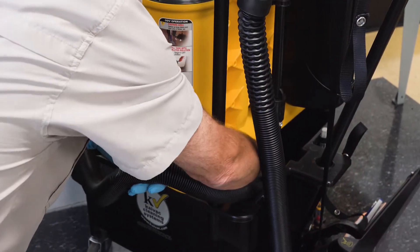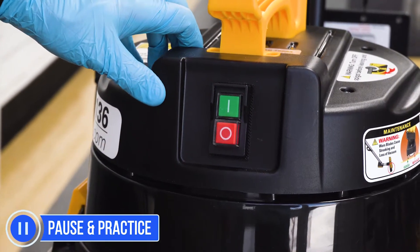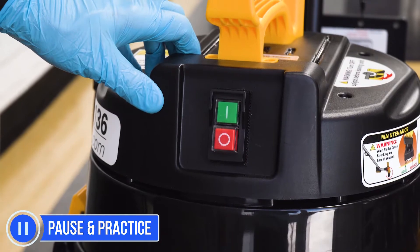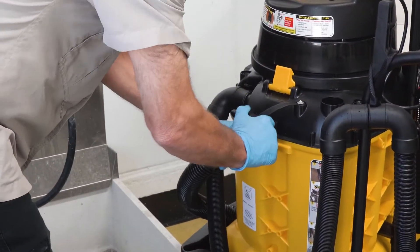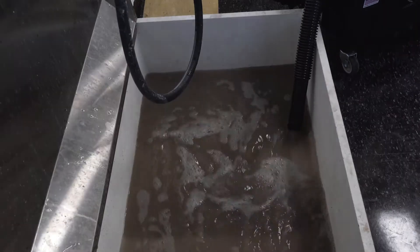When all of the cleaning solution has been removed from the trolley bucket, turn the vacuum motor off. Now return to the dump hose and empty the vacuum tank using the same procedure as previously described.